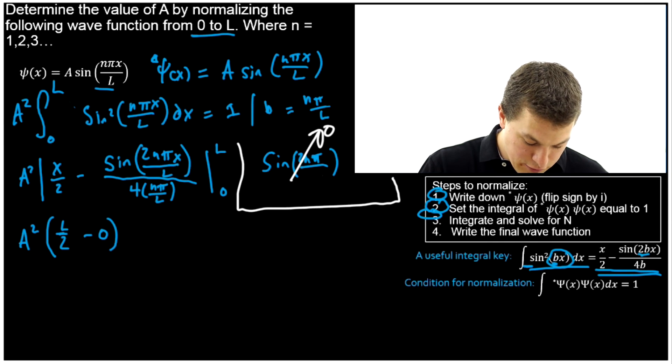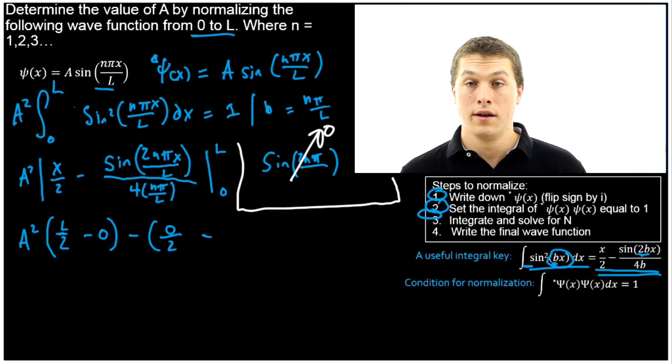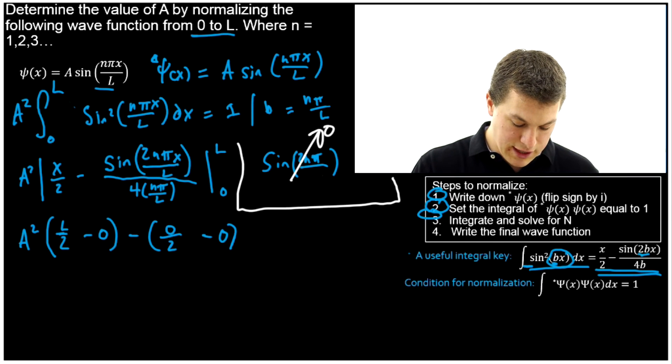Now let's plug in our 0 bound. 0 over 2, well that gives us 0. And once again, when we plug in 0 for x in that sine, our sine is going to become 0. So this whole second part of our argument is 0.